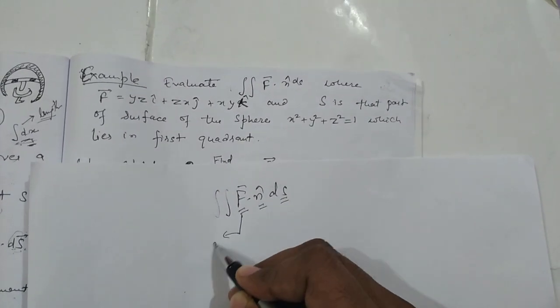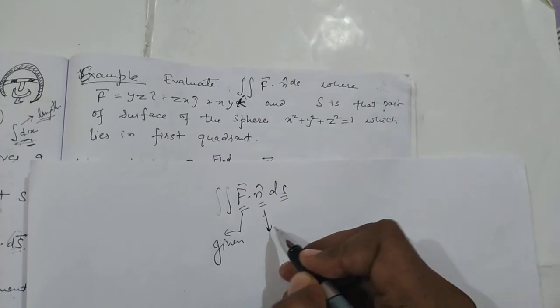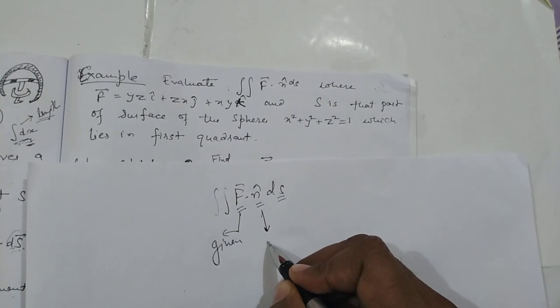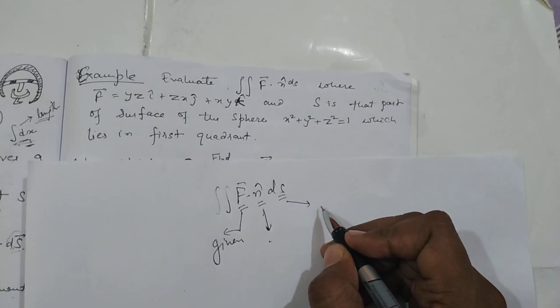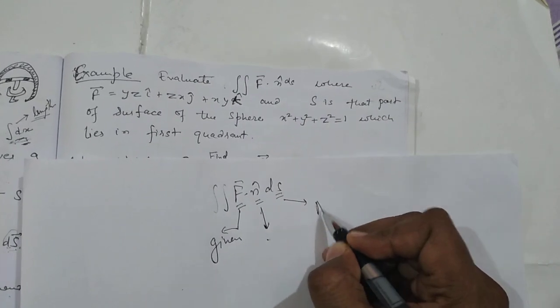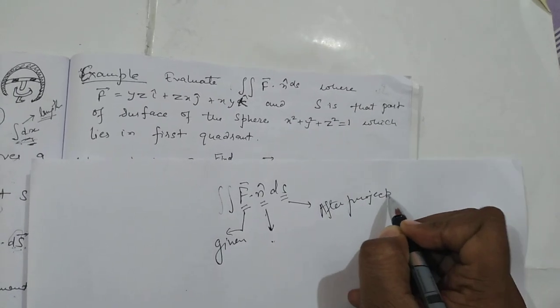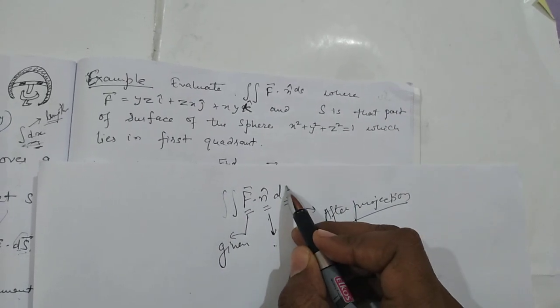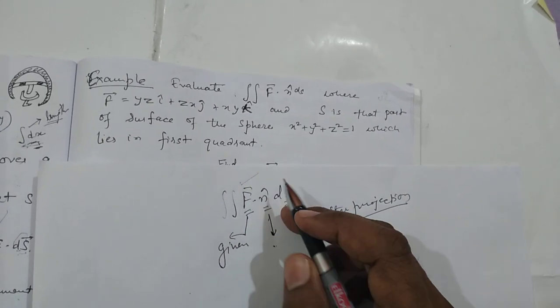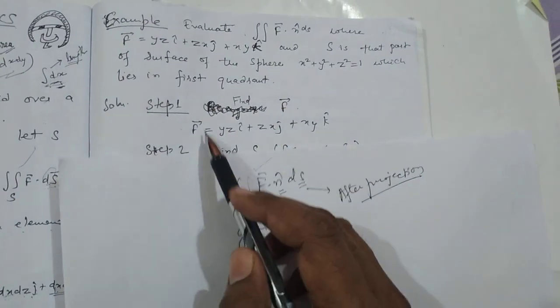To evaluate ∫∫ F·n̂ dS, we need three things: F, n̂, and dS. F is already given. n̂ (the unit normal) we will get from the surface. And dS we will determine based on which projection we take. So these three things — F, n̂, and dS — need to be found.